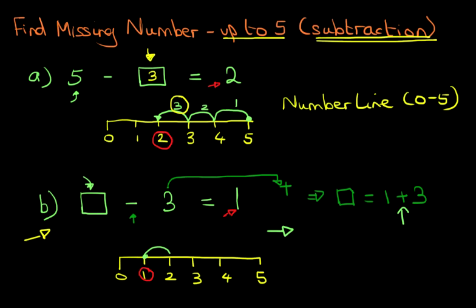So we start from here. We're going to make 1, 2, and 3 jumps. What number have we landed on? We have landed on number 4. 1, 2, 3 jumps. Those are the 3 jumps we made. We've landed on number 4. That is our answer, 4. 4 minus 3 equals 1.